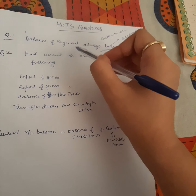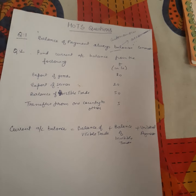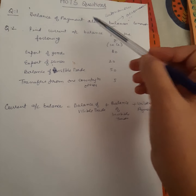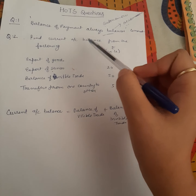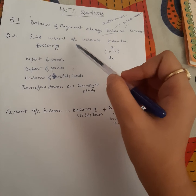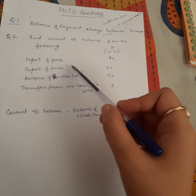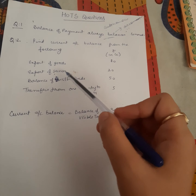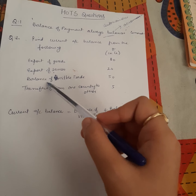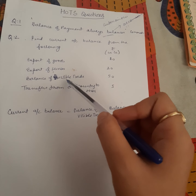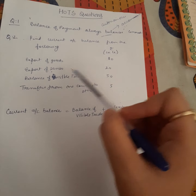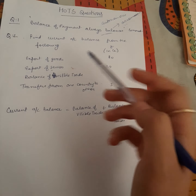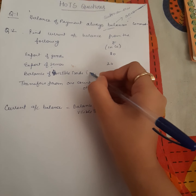The next question is a numerical type: find the current account balance from the following information. You are given export of goods, export of services which are invisibles, balance of visible trade, and transfers from one country to another of 5. Balance of visible trade means export minus import of goods — that is given as 50.